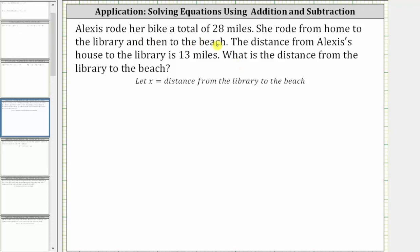Alexis rode her bike a total of 28 miles. She rode from home to the library and then to the beach. The distance from Alexis' house to the library is 13 miles. What is the distance from the library to the beach? And we will let the variable x equal the distance from the library to the beach.